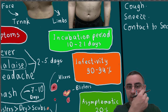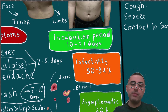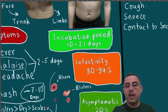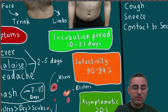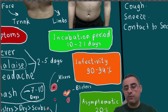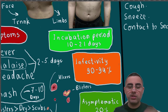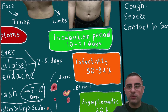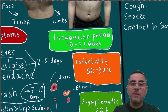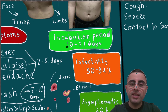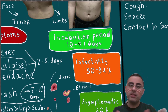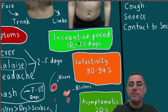The incubation period is the time from first contact with the virus to the appearance of first symptoms. So if a person has contact with someone infected with chickenpox virus, it can take 10 days, two weeks, or up to 21 days before symptoms appear.